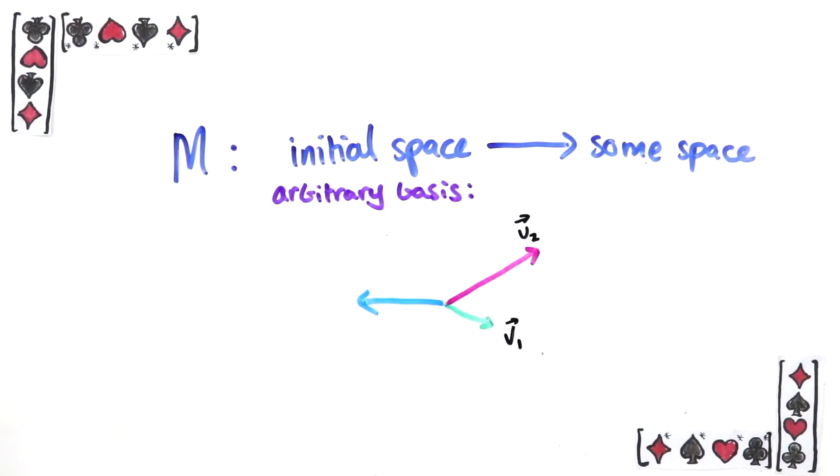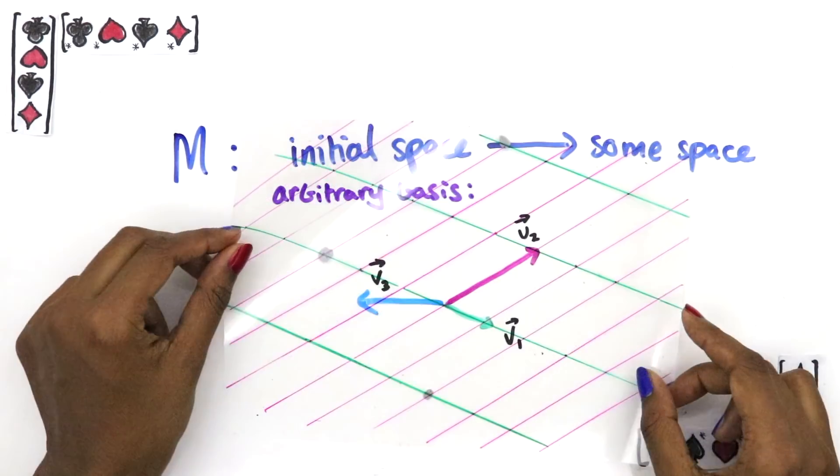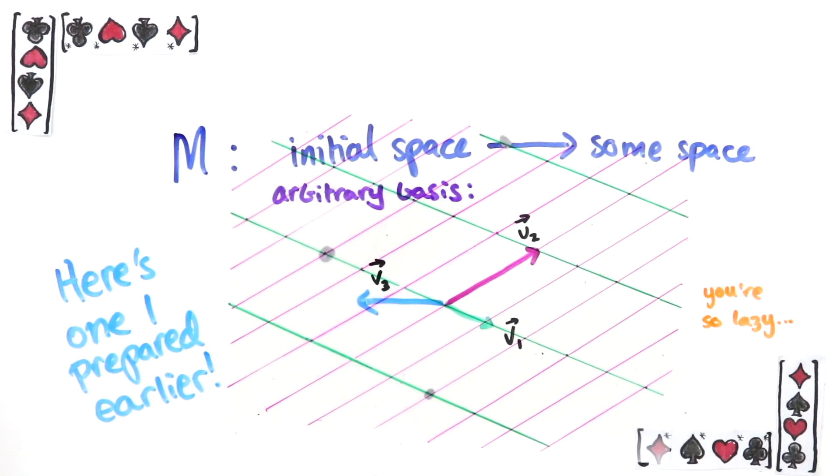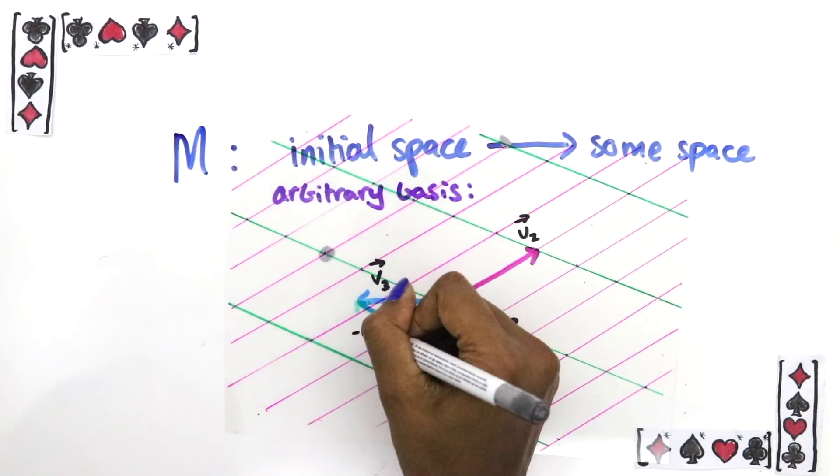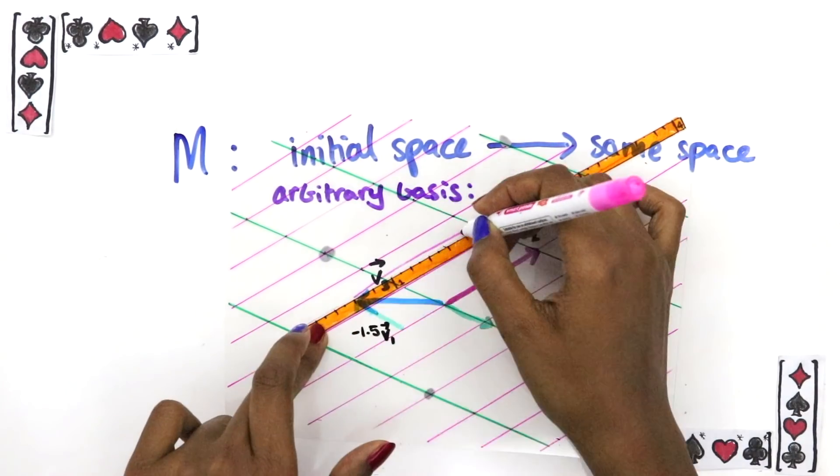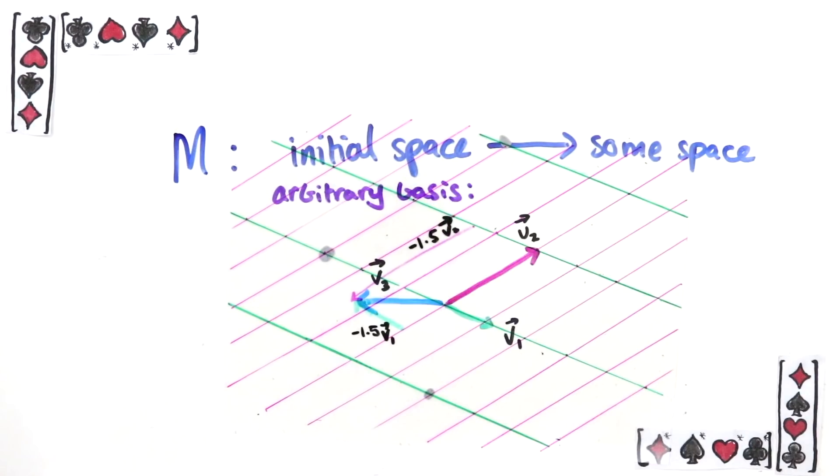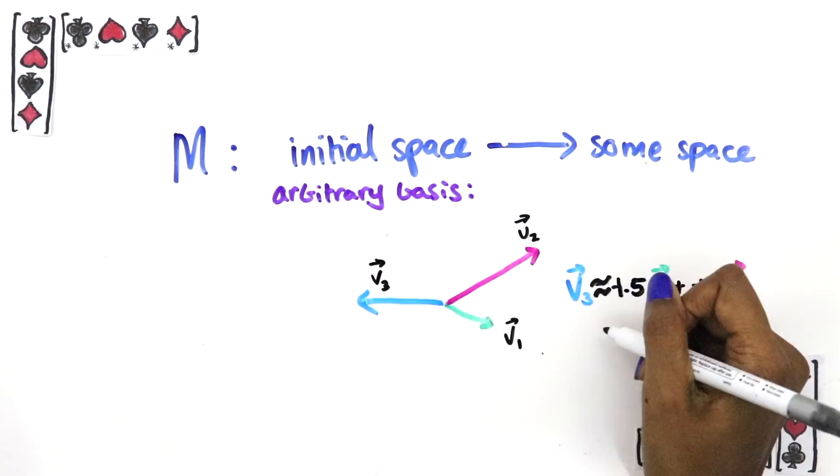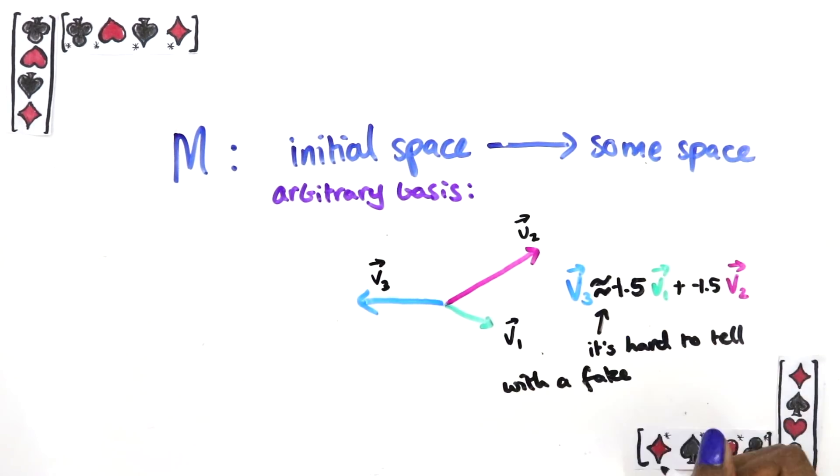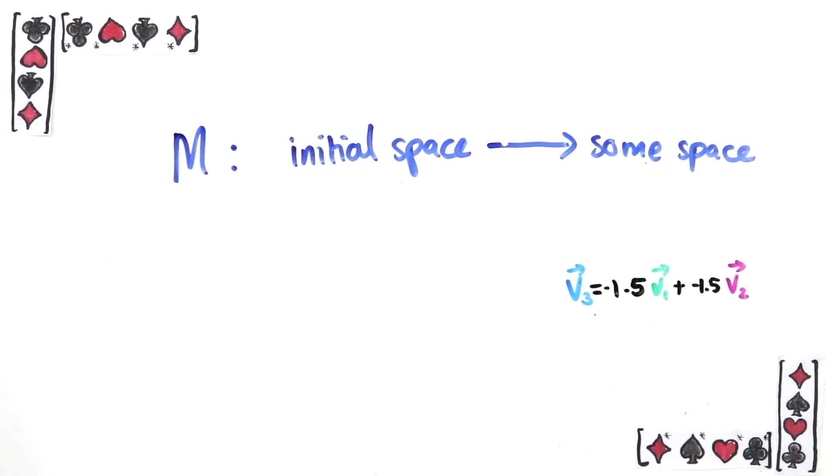To see why, say you have some other vector in the initial space. You can write it as a linear combination of the basis vectors. In 2D, remember you do this by using a grid. So once you've finally got that linear combination, if you apply a linear transformation to it, you can see by linearity that you only needed to know what happened to the basis vectors to compute this thing.